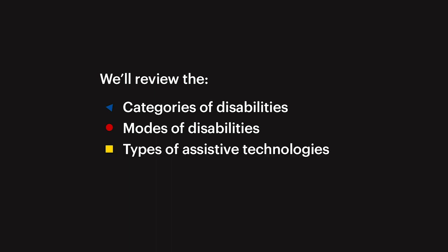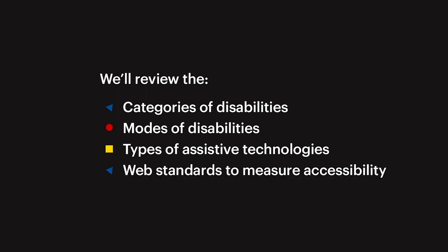So those four reasons are four of the largest, but there are numerous other benefits to providing accessible designs. If you're looking for a specific one in order to make a business case for your stakeholders, I've included a list of resources in the description of the class. Before we dive into style guides, we'll want to lay a basic foundation of accessibility — starting with the categories of disabilities, the modes of disabilities, the types of assistive technologies or AT that folks rely on, as well as the web standards against which accessibility is measured.